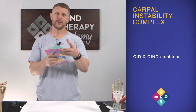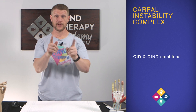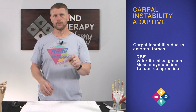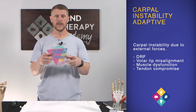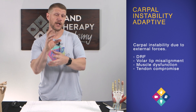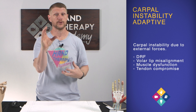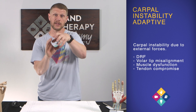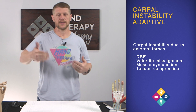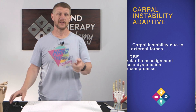Carpal instability complex is when you have both CID and CIND put together — it's both of them combined, so if you understand the two, you understand CIC. Carpal instability adaptive is instability of the carpal row due to external forces. For example, a distal radius malunion where the volar tilt is greater than 12 degrees will have a domino effect causing carpal instability — it's not an intrinsic problem within the carpal row but something proximal driving it.